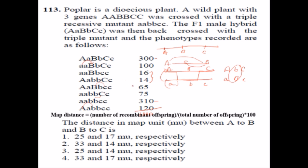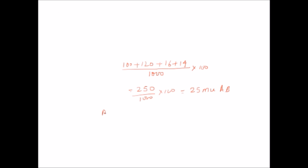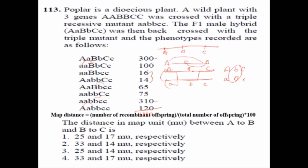Similarly, for the distance between b and c, we take the single crossovers between b and c — which are 65 and 75 — plus the double crossovers 16 and 14, because in a double crossover there is recombination between b and c as well. So: (65 + 75 + 16 + 14) / 1000 × 100 = 170/1000 × 100 = 17 map units between b and c. So the answers are 25 and 17 map units respectively.